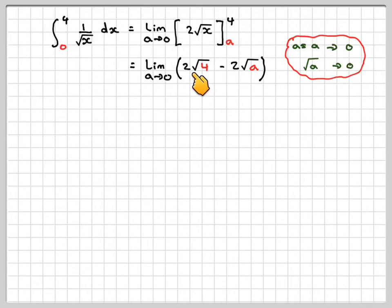And we're going to have 2 times root 4, which is 4. Root 4 is 2, two twos are 4. So we've got the limit as a goes to 0 of 4, which is equal to 4. Therefore, it converges.